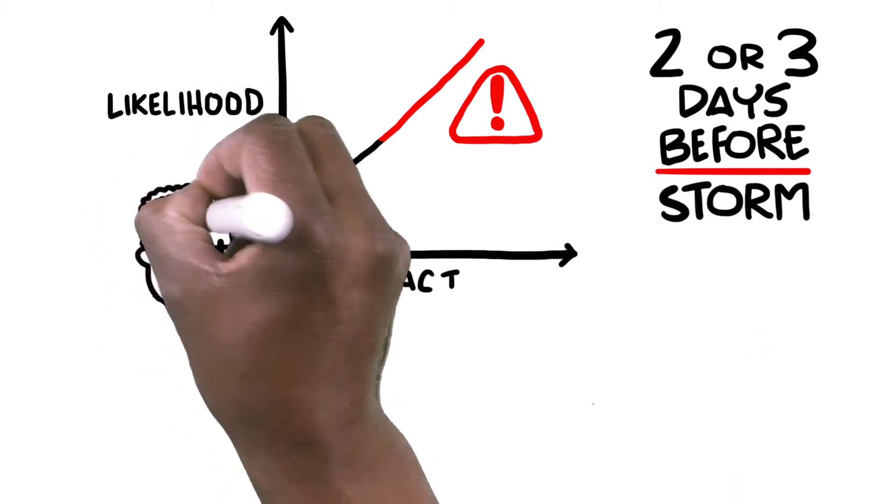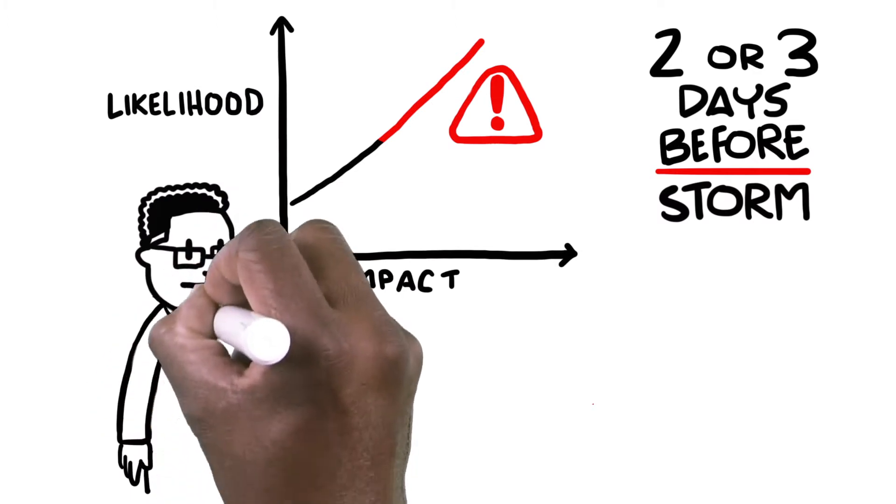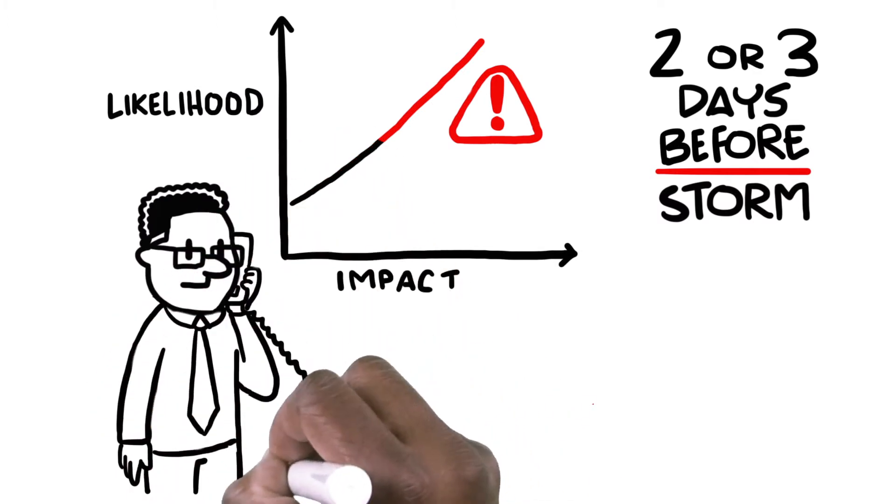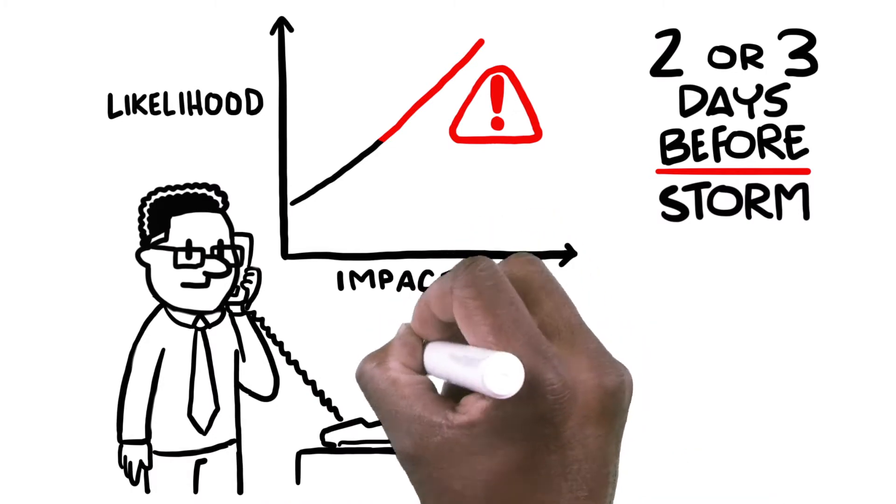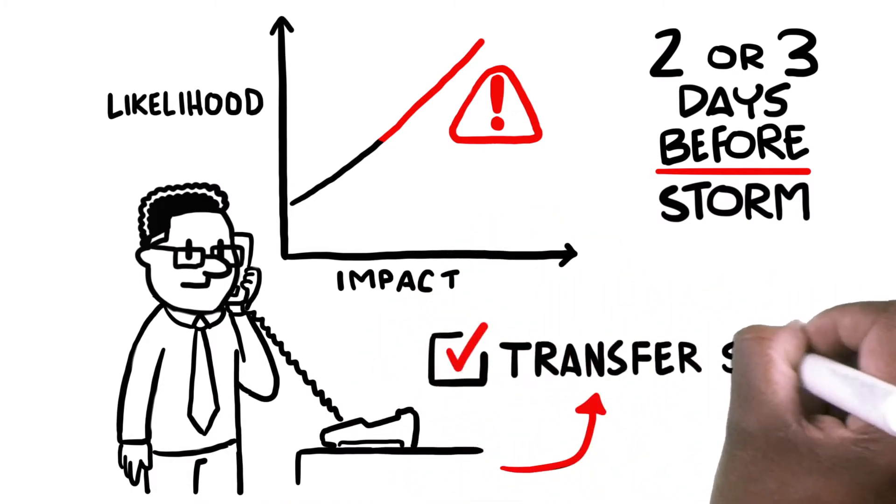If the forecast shows that a predetermined threshold has been reached and a disaster is imminent, then decision makers trigger early action to target help exactly where it will be needed.